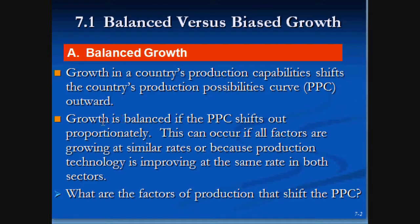Growth is balanced if the production possibility frontier shifts out proportionally. If you have wheat on the vertical axis and cloth on the horizontal one, an increase in technology will increase both of them proportionally the same amount, so there's no bias growth. This can occur if all factors are growing at a similar rate or because the technology makes it possible.